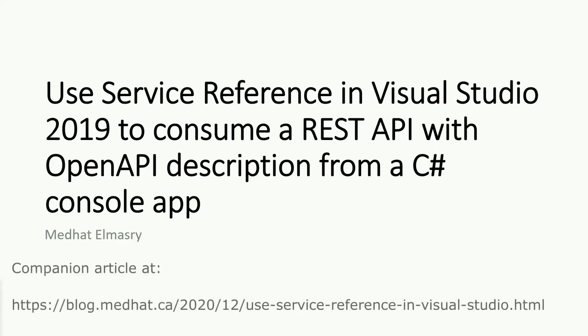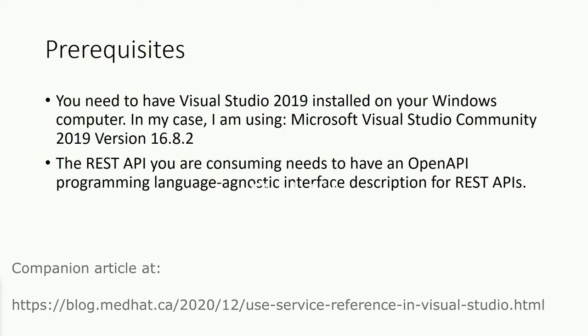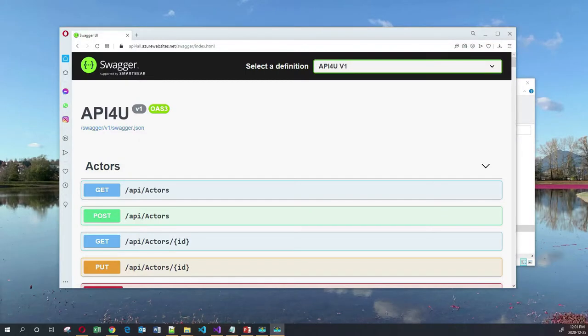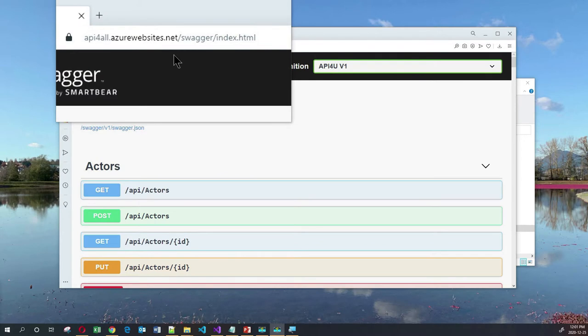Hi, my name is Medhat al-Masri and today I'm going to show you how easy it is to use the service reference in Visual Studio 2019 to consume a REST API with OpenAPI description from a C# console application. Before you proceed, you need to have Visual Studio 2019 and the API you're consuming has to have an OpenAPI programming language agnostic interface description for REST APIs. Today, for testing purposes, we're going to be using an OpenAPI endpoint at this address.